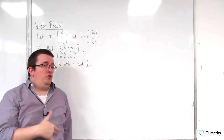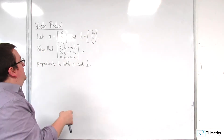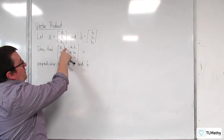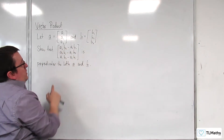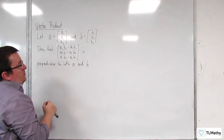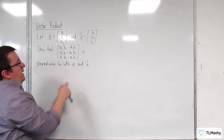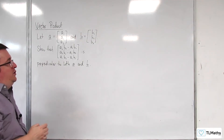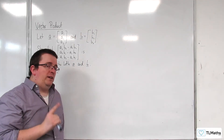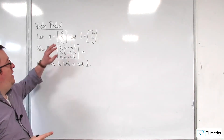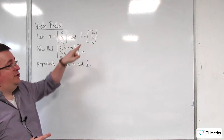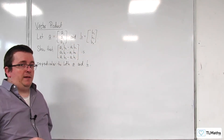I'm going to introduce you to a vector which has elements: (a2·b3 − a3·b2), (a3·b1 − a1·b3), and (a1·b2 − a2·b1). What we're going to do is show that this vector is perpendicular to both a and b.